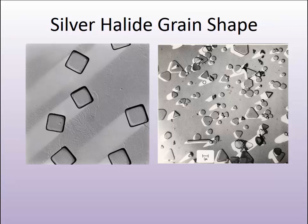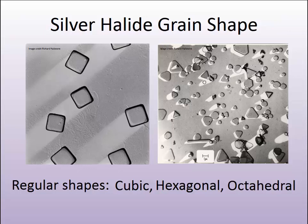When we view high-magnification micrographs of silver halide grains, we notice that they have very regular shapes. They will have a shape ranging anywhere from a cube to either a hexagonal shape or even an octahedral shape, but that's about all you normally see. It's very regular.